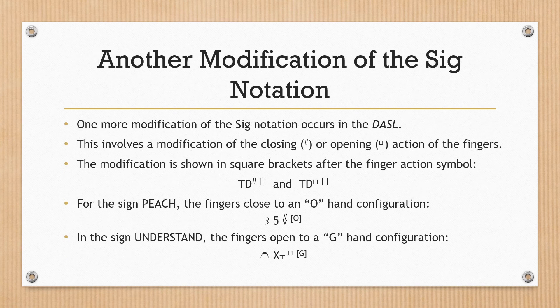Another modification of the SIG notation. One more modification of the SIG notation occurs in the DASL. This involves the modification of the closing or opening action of the fingers. The modification is shown in square brackets after the finger action symbol. For the sign PEACH, the fingers close to an O hand configuration. In the sign UNDERSTAND, the fingers open to a G hand configuration.